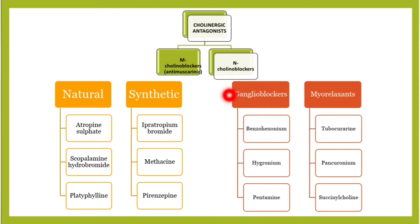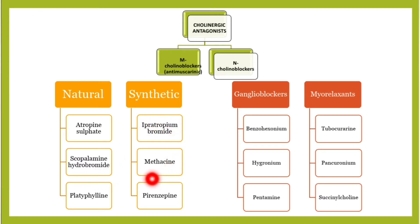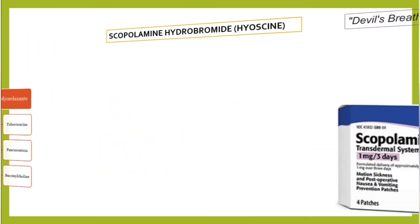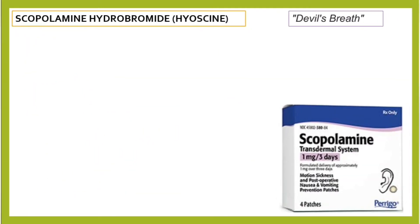In this video we are going to continue with our m-cholinoblockers. We will talk about scopolamine hydrobromide, platyphylline, ipratropium, metacine, pyrenzepine, and others. Let's start with scopolamine, also known as hyoscine.